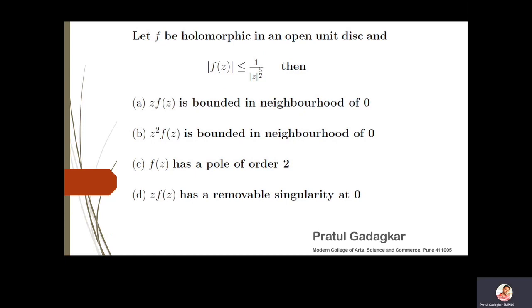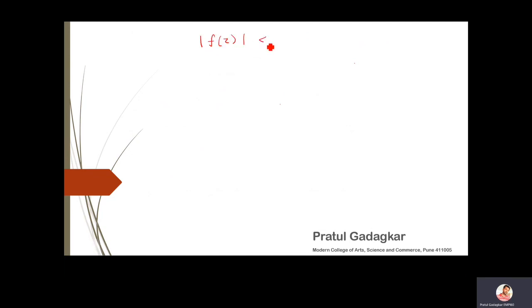In this question, we are given that the function is holomorphic in an open unit disk, and the condition on the function is |f(z)| ≤ 1/|z|^(5/2).